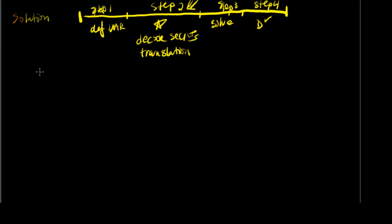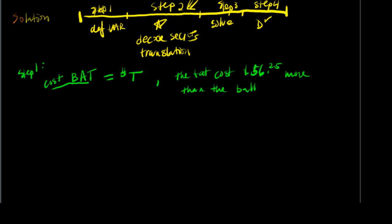We were told that the bat is what we're looking for, the cost of bat. So in our step one, we are going to assume that we pretend we know what the bat cost by assigning it to a variable. We'll call it T, T dollars. Since we were told that the bat cost $56.25 more than the ball, we can literally go word for word since the bat cost T.